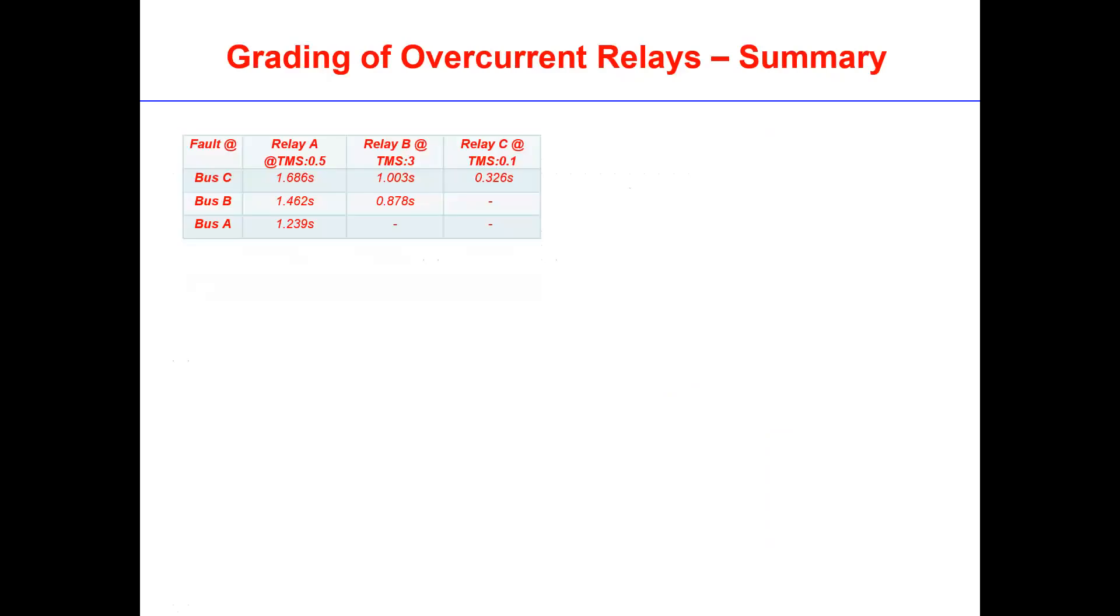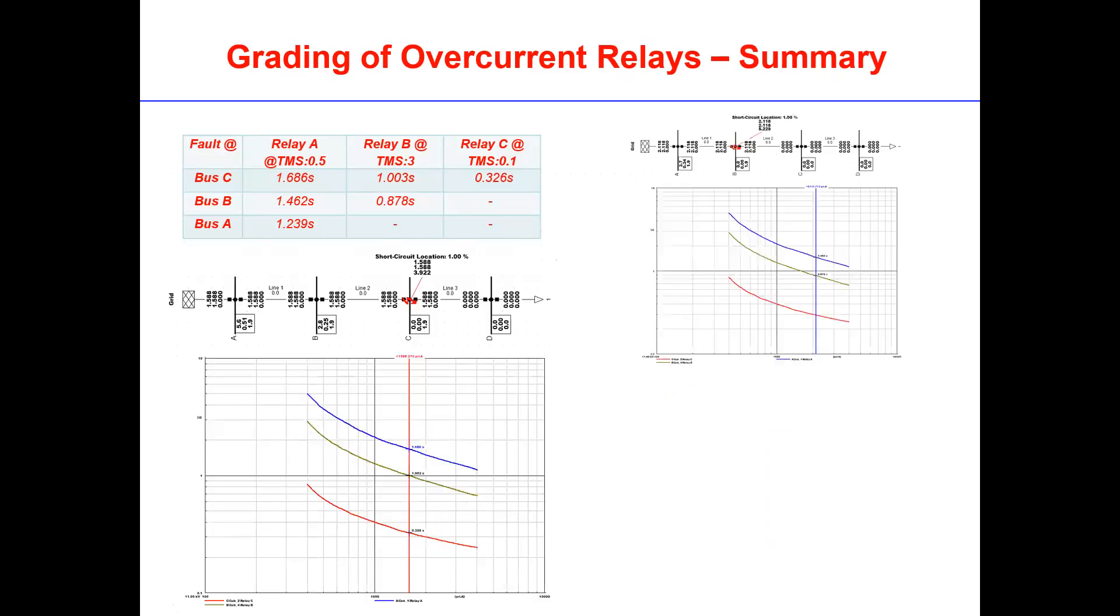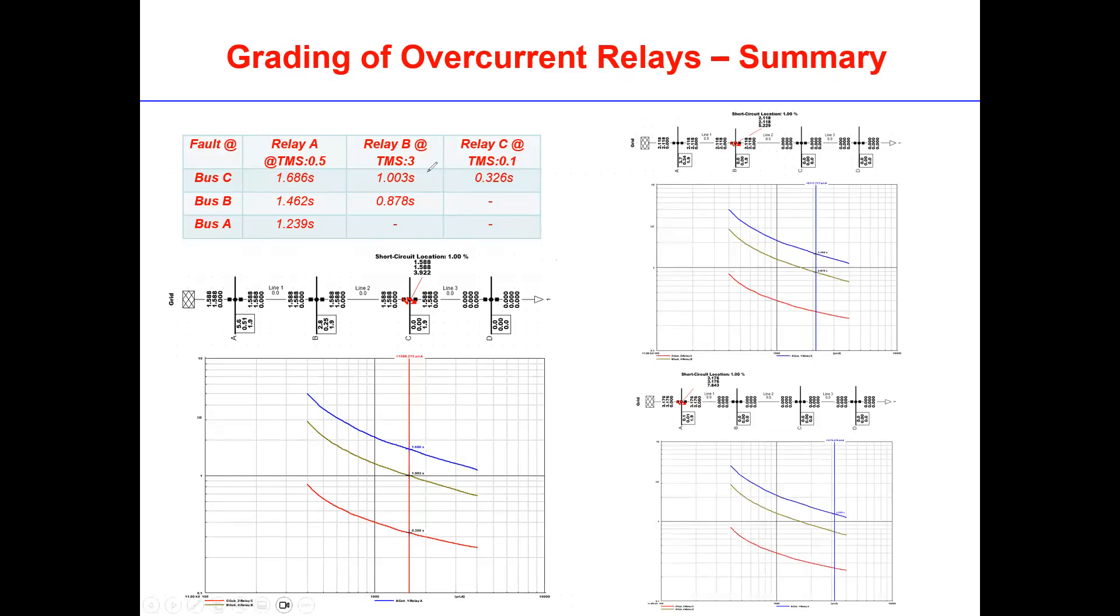We can have a look at the summary. When we have faults at bus C, relay C tripped first at 0.3 seconds, then relay B provides the backup, and then relay A tripped at a delayed time, 1.6 seconds. And then if the fault is at bus B, then bus B and A are tripped, relay B at 0.8 and bus A at 1.4. And then when the fault is at bus A, only bus A tripped at 1.59 seconds.